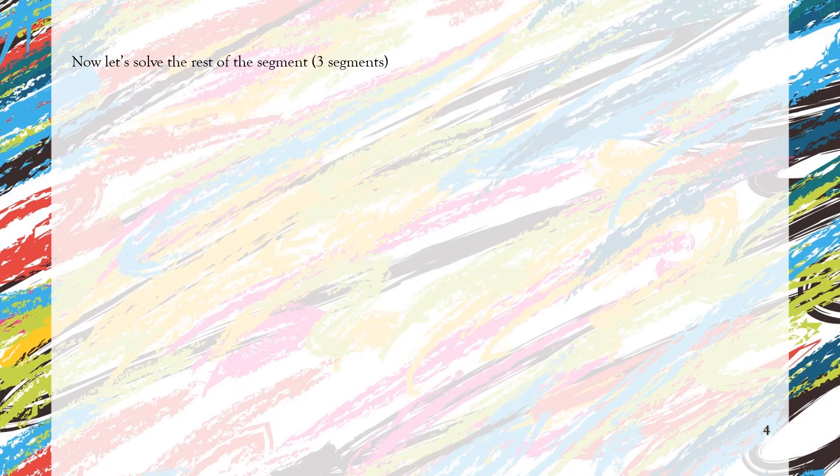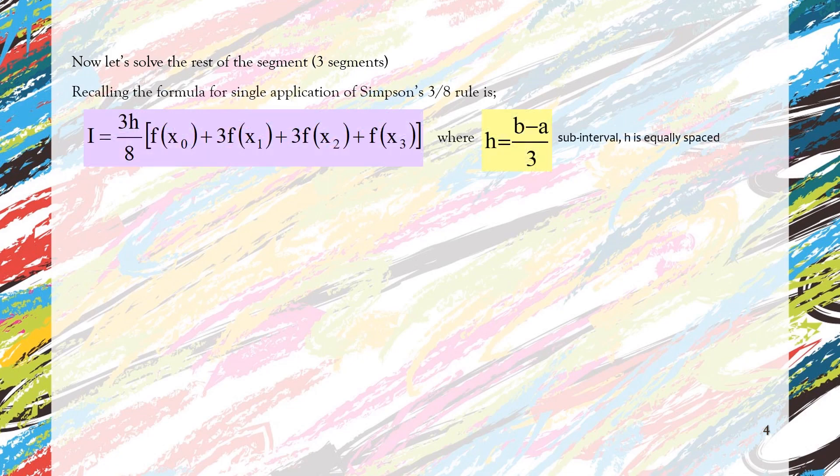So the last three segments will be solved using the Simpson's 3/8 rule. This is the formula. And since we solve the Simpson's 3/8 rule not from the beginning but from the last three segments, we readjust the value of a = 0.32, which is the starting point of where we're going to solve using the 3/8 rule, and the endpoint b is 0.8.